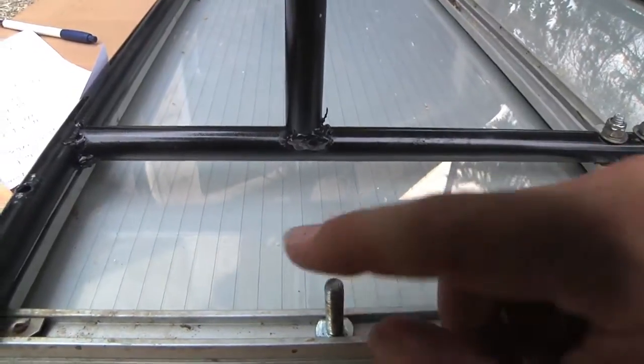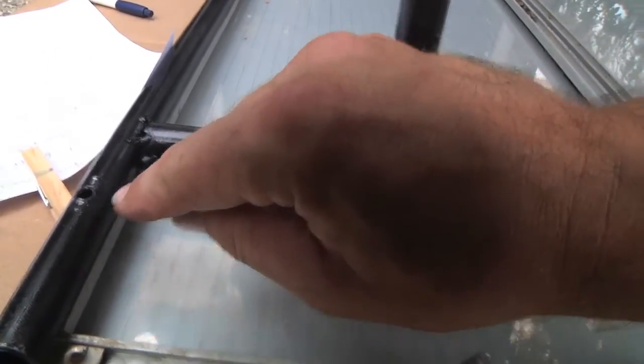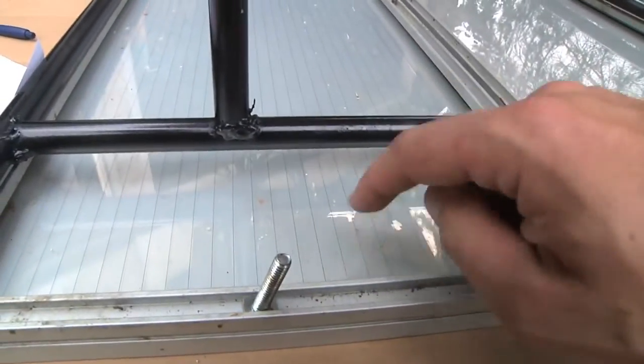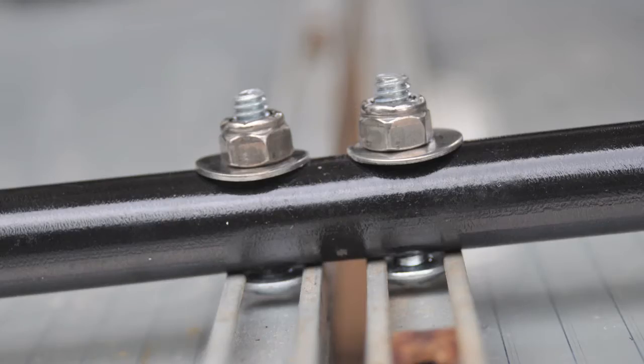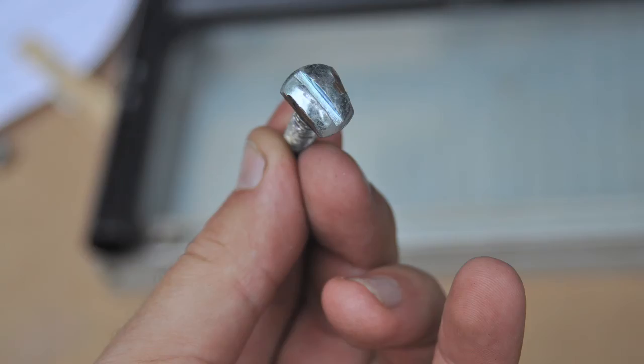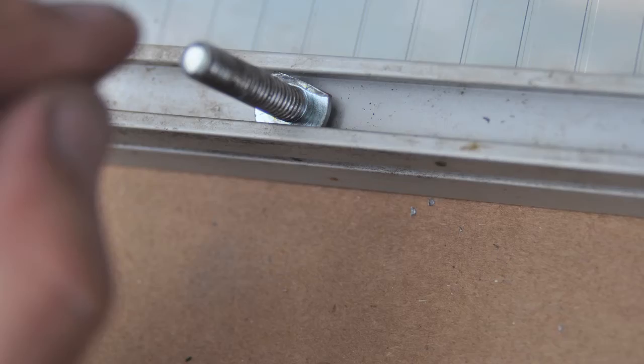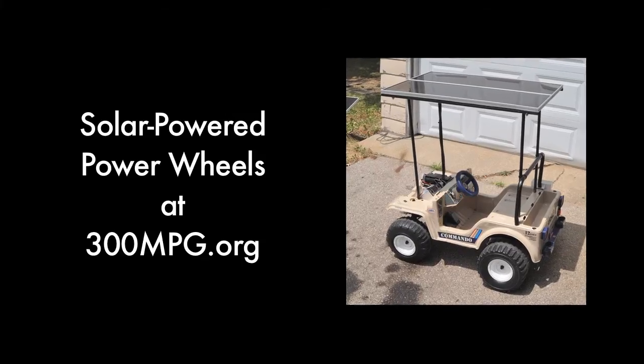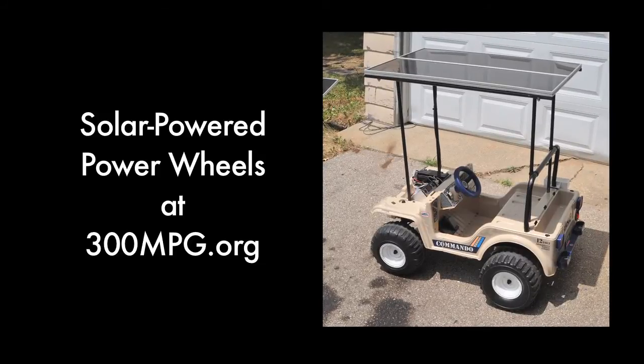up, set the entire thing down on the frame so that the bolt lines up and goes through the hole. Once that's done, we'll just add the nut to tighten the whole thing down and our solar panels will be attached to the rack on the power wheels.